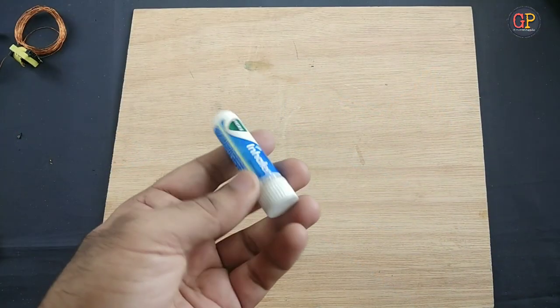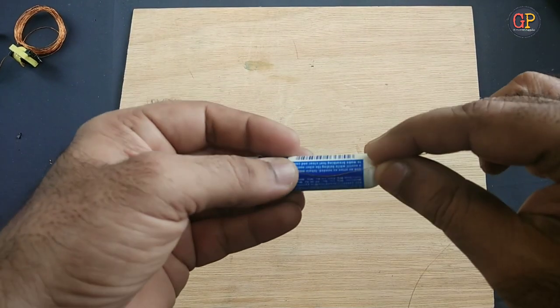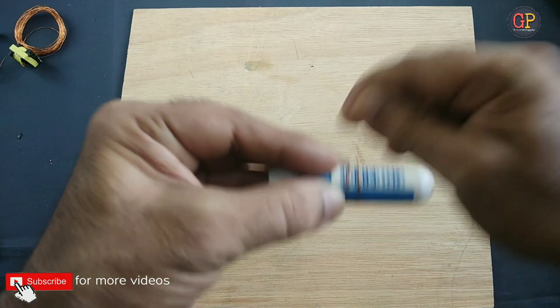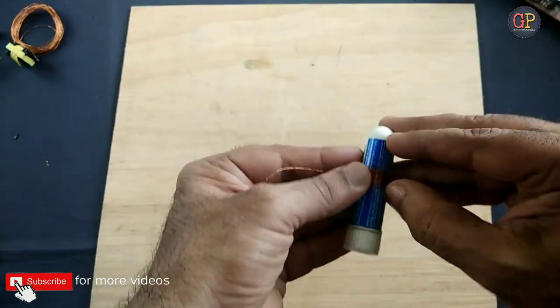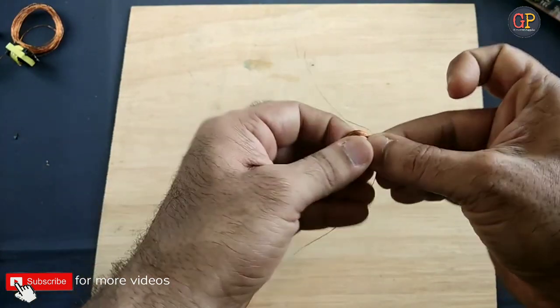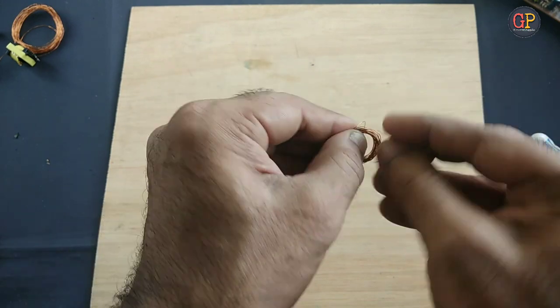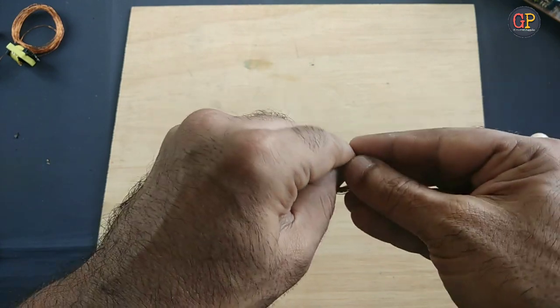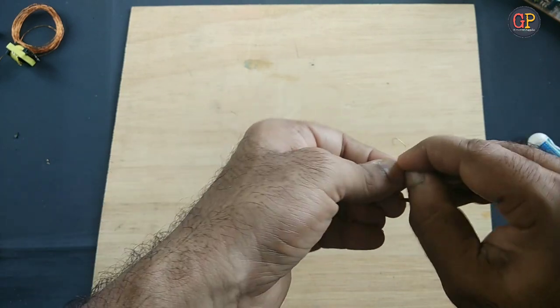You can take any tubular object like this. I am using this, but you can use a marker pen also or any similar thing. Then make a knot so that it will not be loosened. Similarly, tie the other side also.